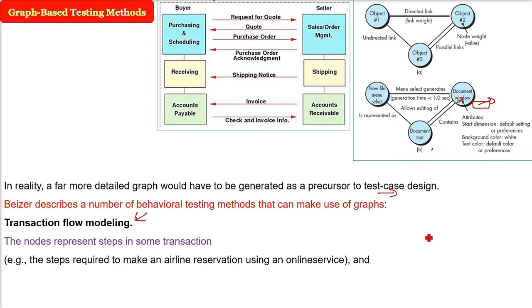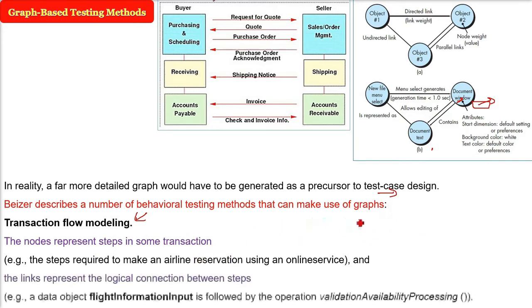You are trying to reserve a ticket on airline reservation system. So what will be the nodes? The link represents the logical connection between steps and the node will represent the step in some transaction. For example, a data object can be flight information input. And this is followed by an operation, which is called validation available process.